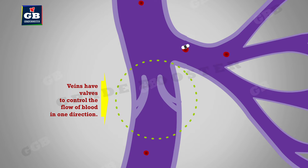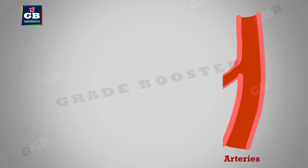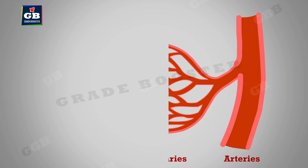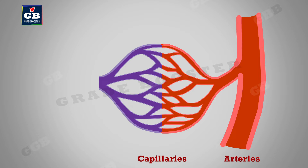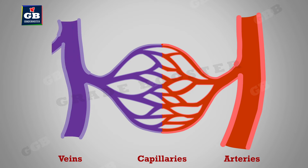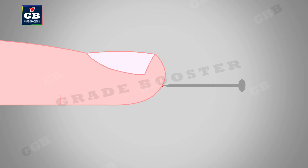one direction. The arteries branch into thin vessels called capillaries to reach the cells for the supply of materials. These capillaries rejoin at the other end to form veins. If the blood vessels are cut at any point by incident,